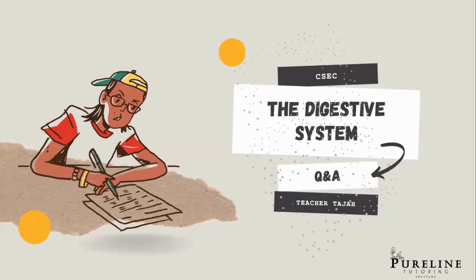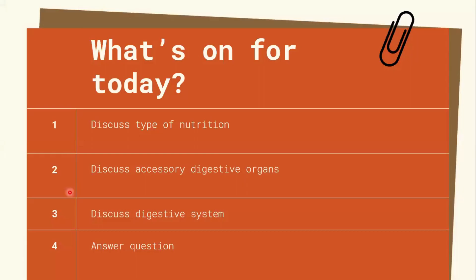So the first topic we're going to be doing today is the digestive system and it's CSEC. I'll just get my pointer. So the time actually starts now for the 10 minutes. We'll skip that introduction. What are we going to be discussing today? We'll look at types of nutrition, the accessory digestive organs, digestive system, and then finally we'll get to answering that question.